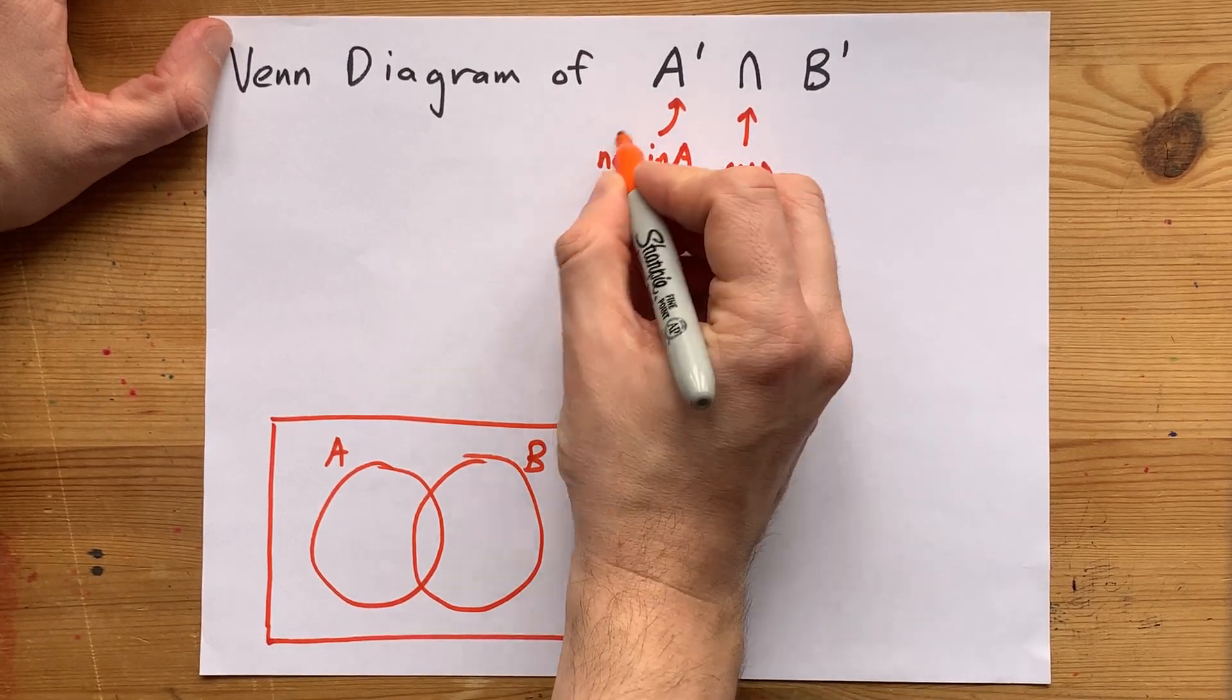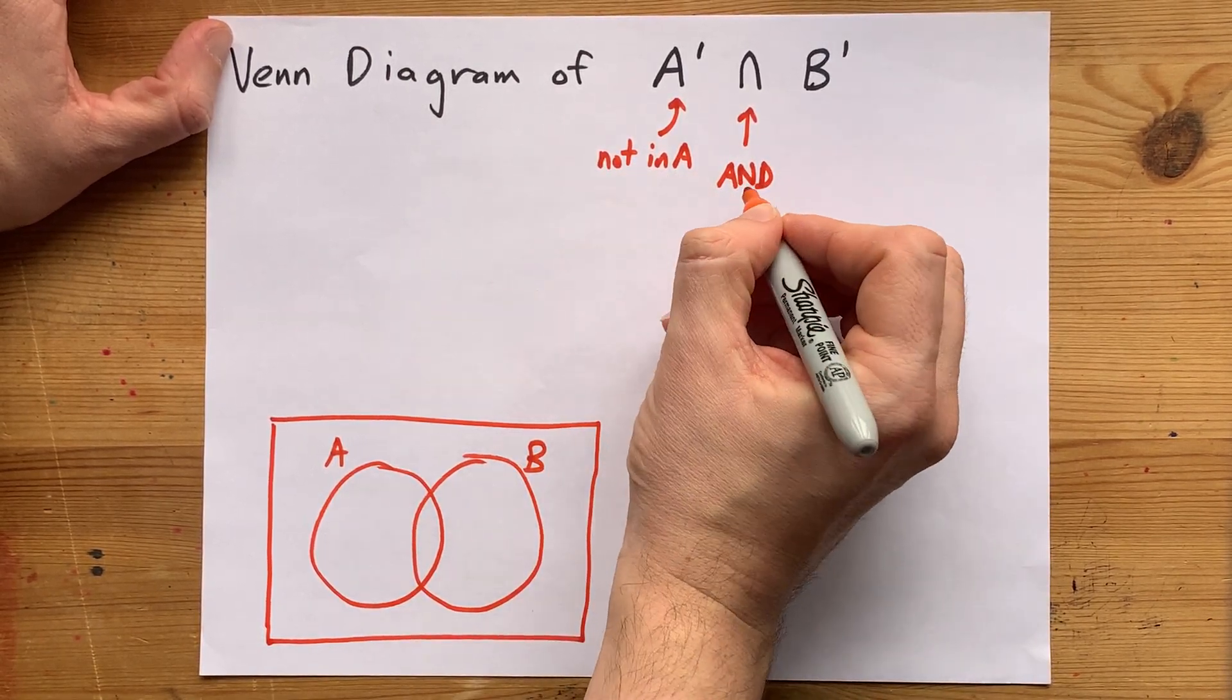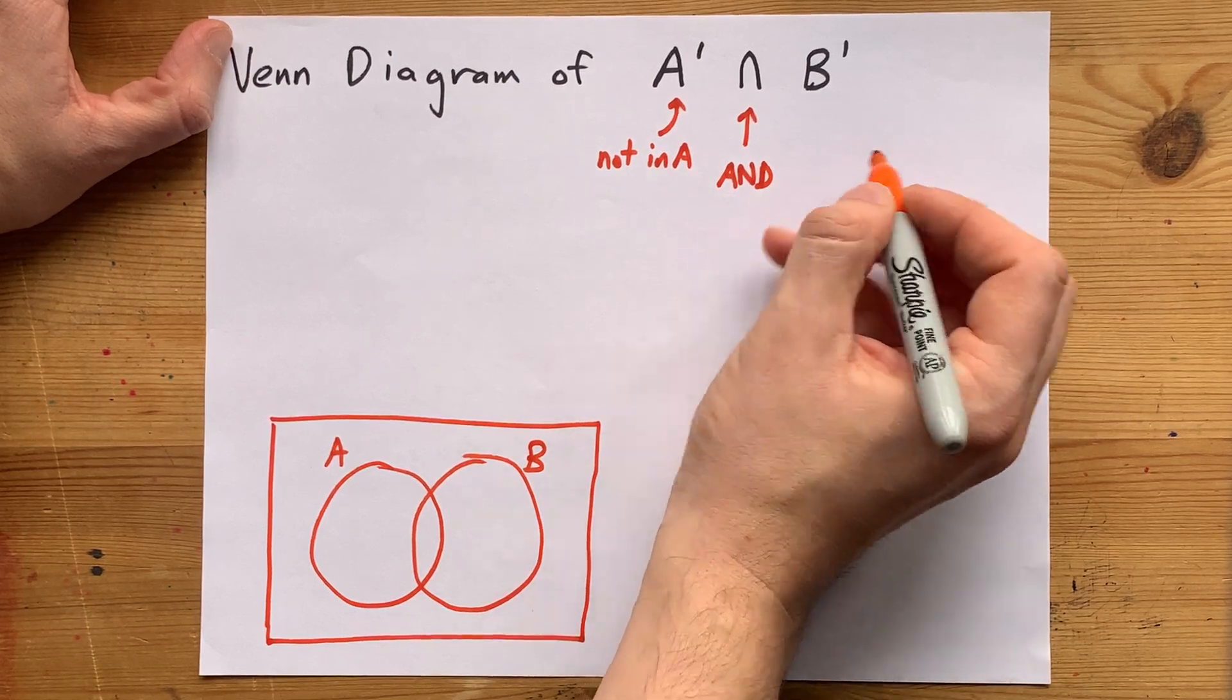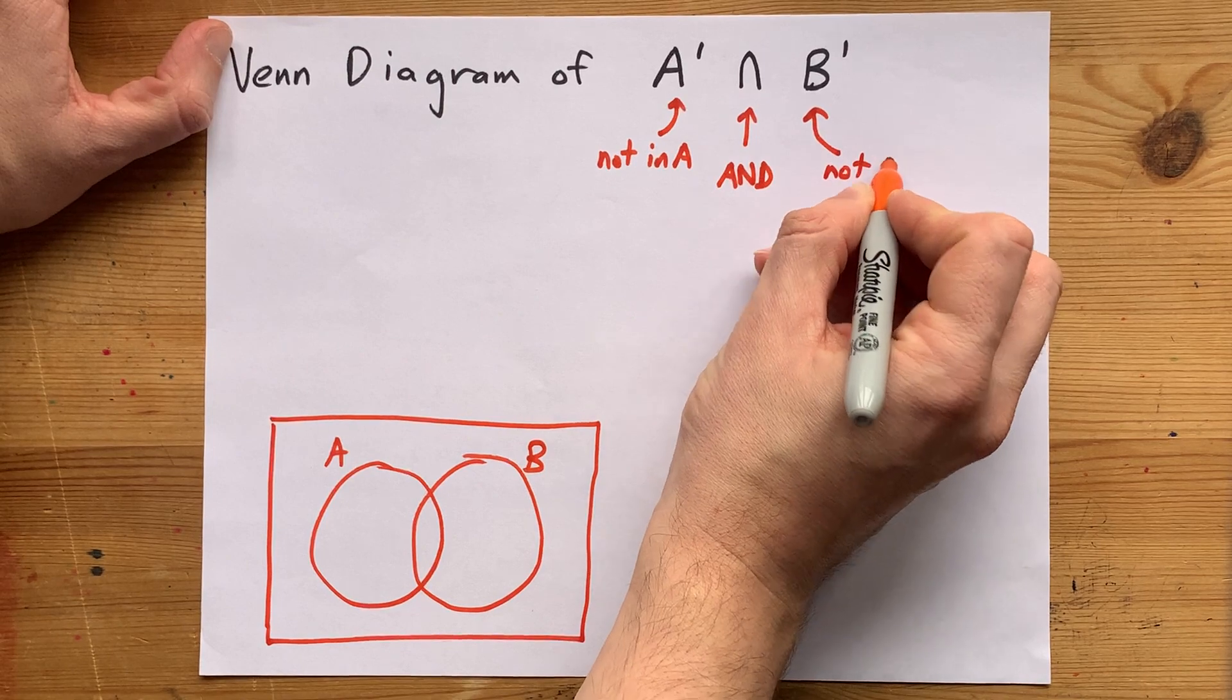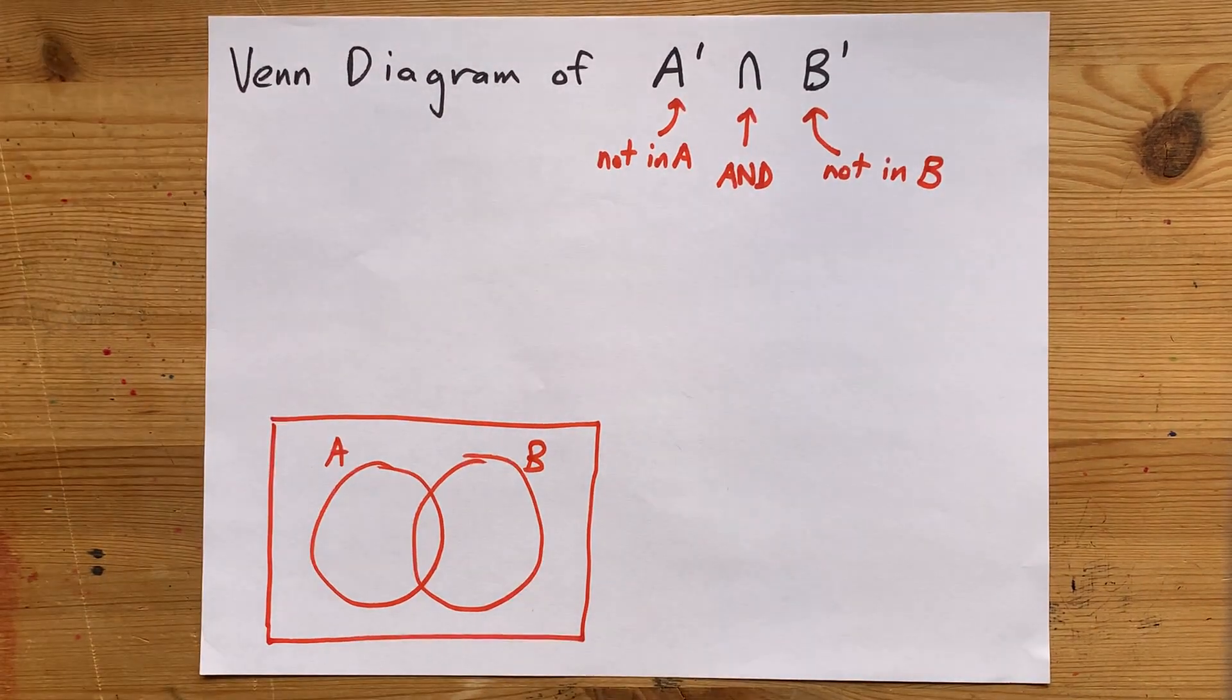Meaning that this descriptor has to be true of a section, and also this descriptor has to be true in order for you to shade it. And B complement gives you a descriptor of not inside B as well.